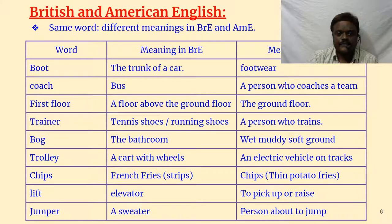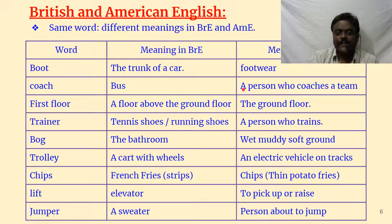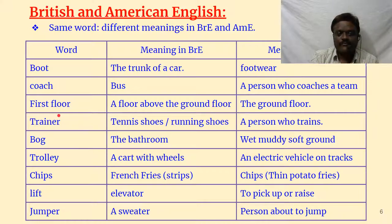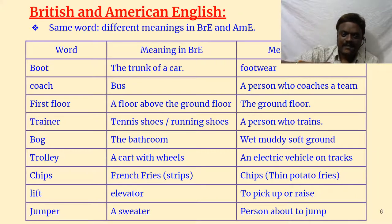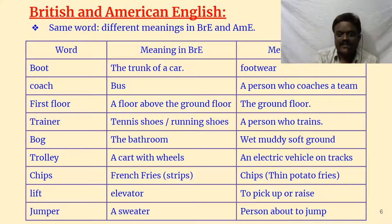Coach means bus in Britain; in America, coach means a person who coaches a team — cricket coach, football coach. 'First floor' in England is actually the second level, while in America first floor is the ground level. 'Trainer' in British English means tennis shoes or running shoes, whereas in American English a trainer is a person who trains someone — a swimming trainer or football trainer. 'Bog' in England means bathroom, whereas in America, bog means wet, muddy, soft ground — marshy land.